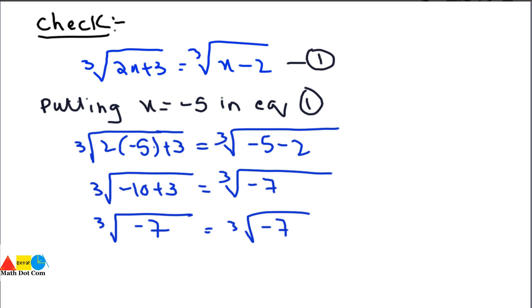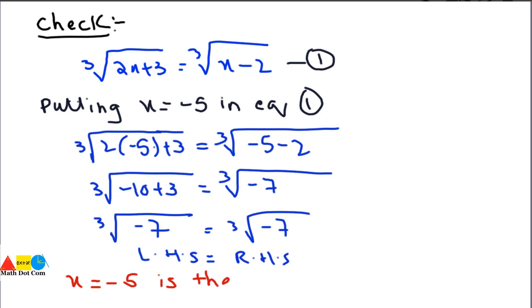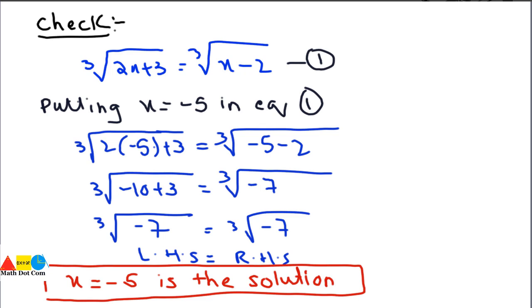The left-hand side equals the right-hand side, so we can say without any hesitation that x = -5 is the solution of the given equation. This is how we can solve equations involving radicals with multiple variables and constants. Let's look at one more example, as examples make your concepts clear.